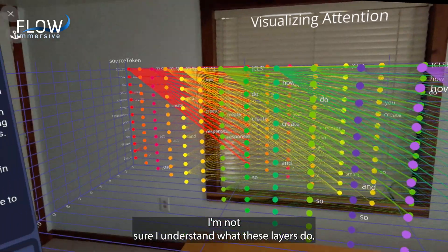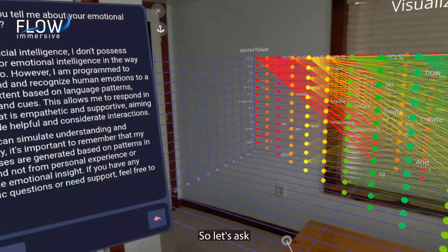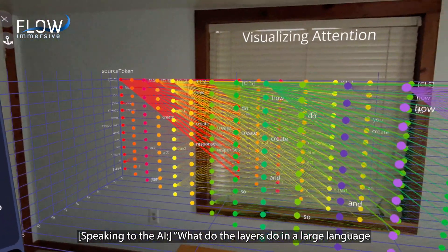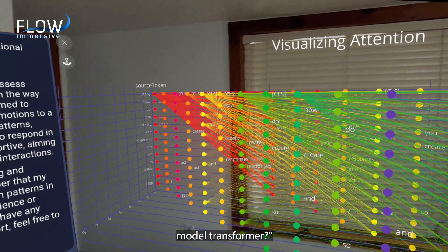I'm not sure I understand what these layers do, so let's ask. What do the layers do in a large language model transformer?